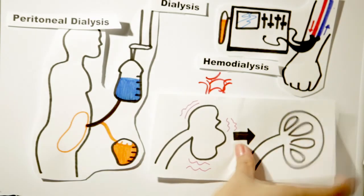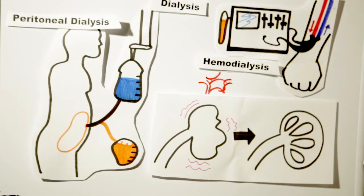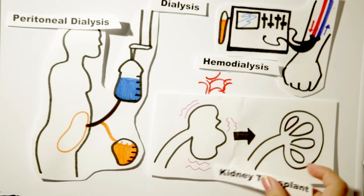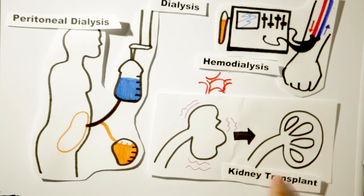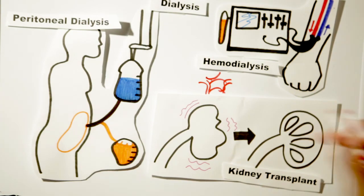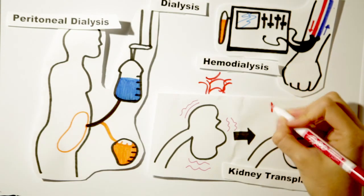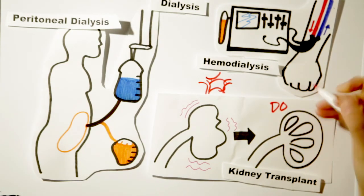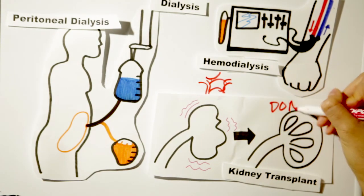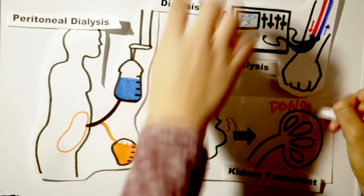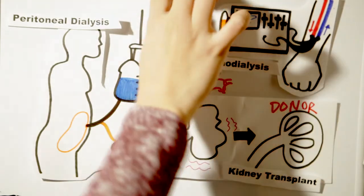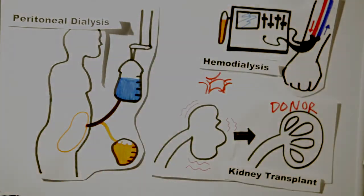Hemodialysis is done usually three times a week. For kidney transplants, you receive a replacement kidney from a family member or donor, which will allow you to live a normal life for many years.